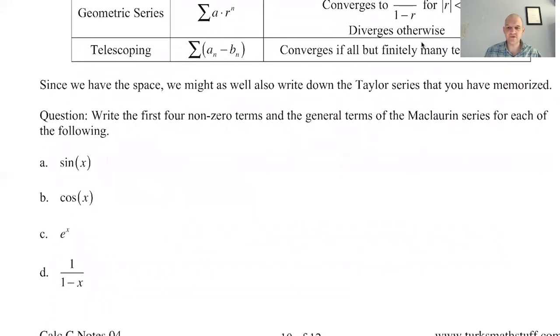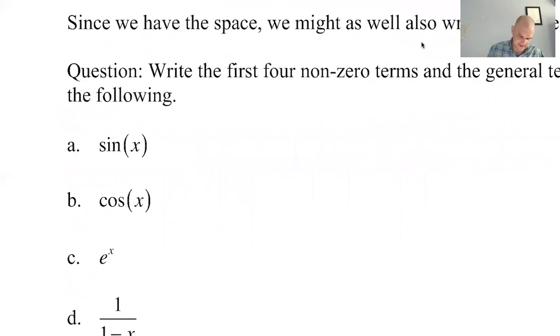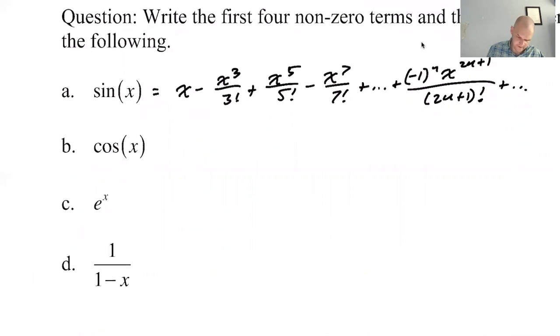And then these are the ones that we should have memorized. So I'm going to write these out. So sine, sine is odd. And so it's going to be X minus X cubed over three factorial, X to the fifth over five factorial. First four non-zero terms. So you're always asked for non-zero terms to avoid that annoyance where somebody's like, well, I wrote a bunch of terms, but they're all zero. Nobody thinks you're clever when you do that.